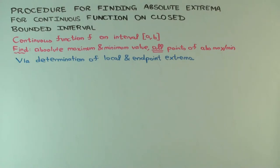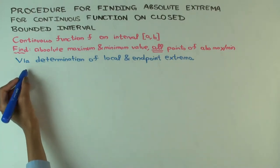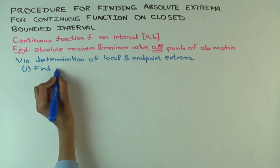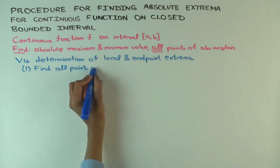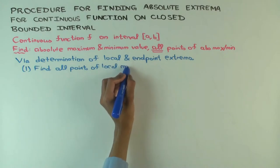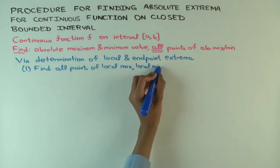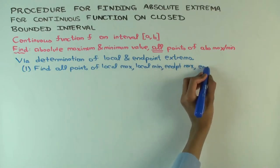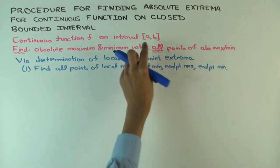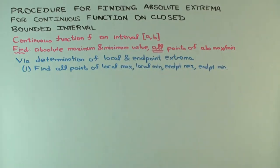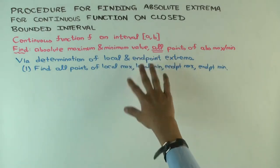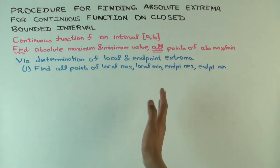One way to do this is to first solve the problem of finding local and endpoint extrema. Step one: find all points of local max, local min, endpoint max, and endpoint min. Endpoint max and endpoint min basically means the points A and B — whether A is a max or min from the right, and whether B is a max or min from the left. Local max and min are points in the interior of the domain, in the open interval (a, b).